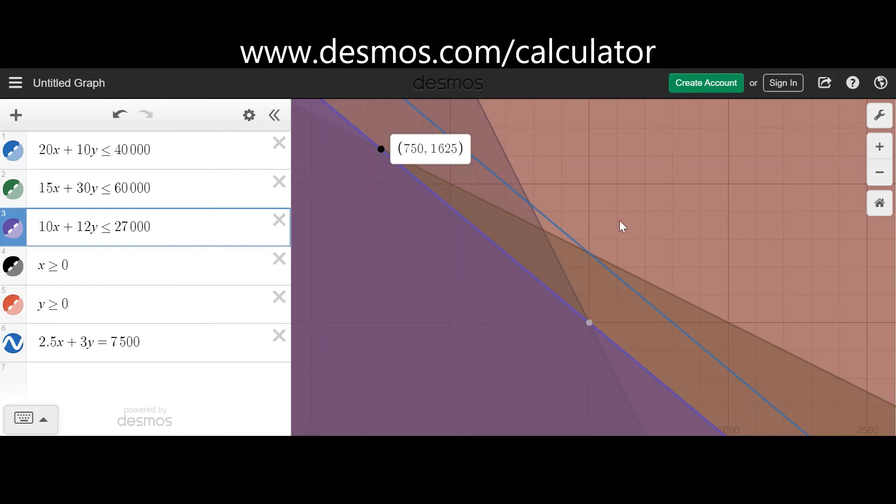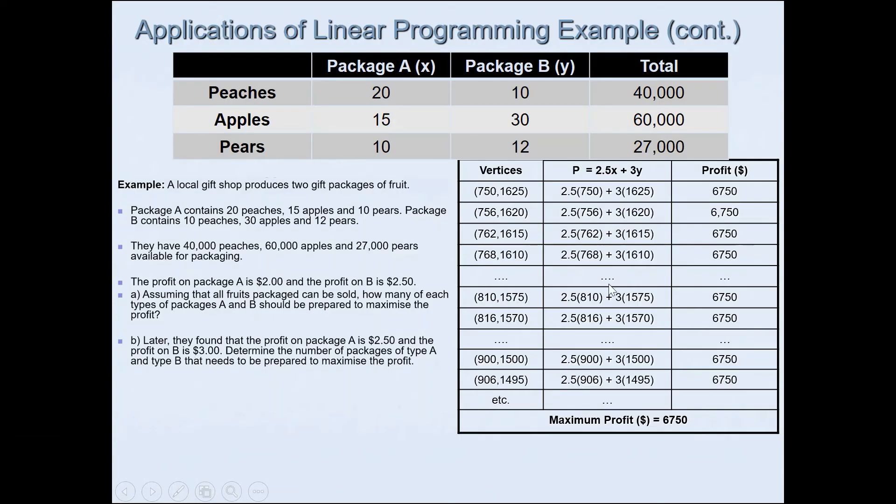By using the vertices from Desmos, I've already filled in the table here for you. Please pause the video and try and do this yourself and see if your answer matches with this one. You can clearly see that there are several combinations that gives you a maximum profit of 6750 in this case.